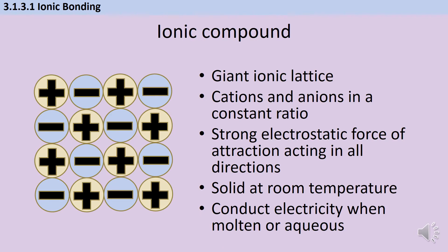Ionic compounds form giant ionic lattices containing positive cations and negative anions in a constant ratio. This doesn't mean one to one, but if I take magnesium chloride, any part of that lattice will have the same ratio of one magnesium cation to two chloride anions. These ions are held together by a strong electrostatic force of attraction acting in all directions.